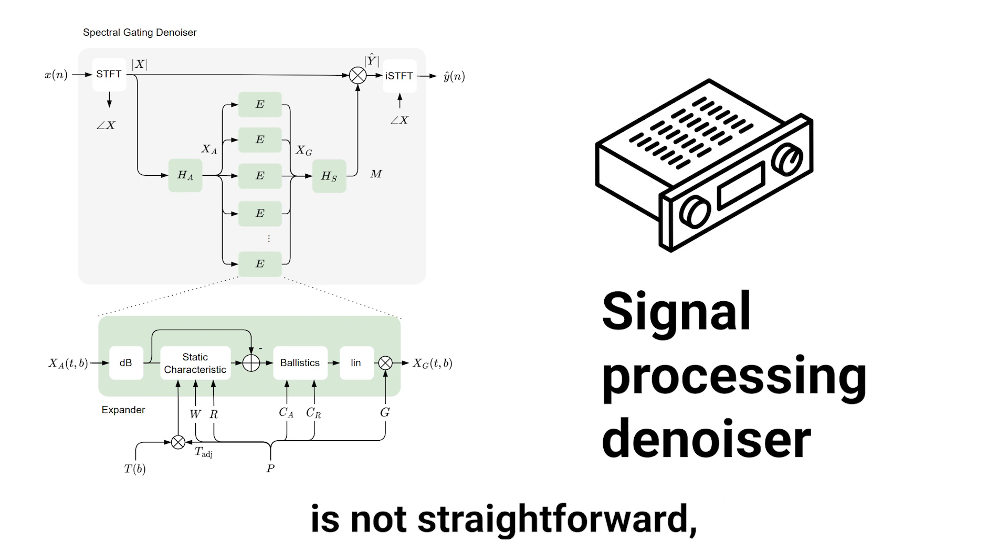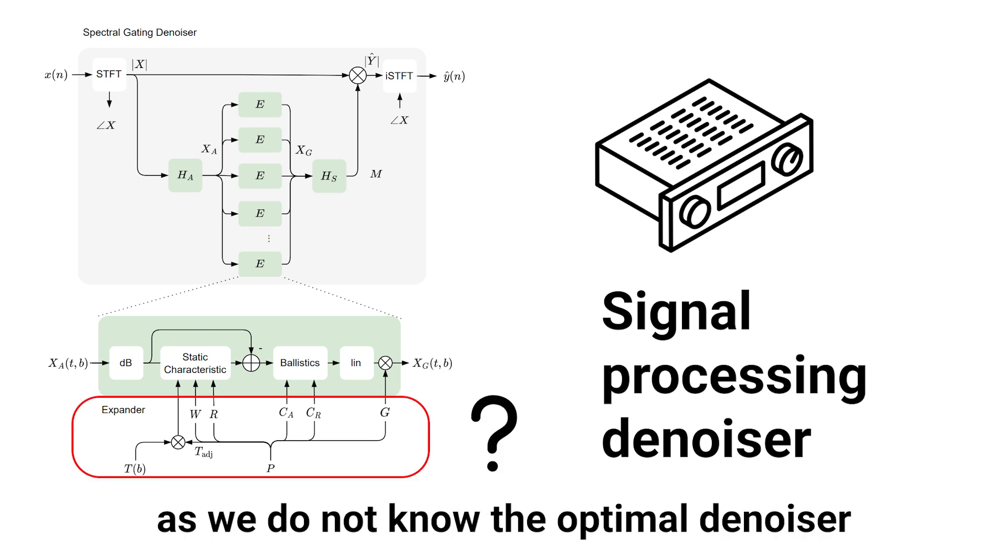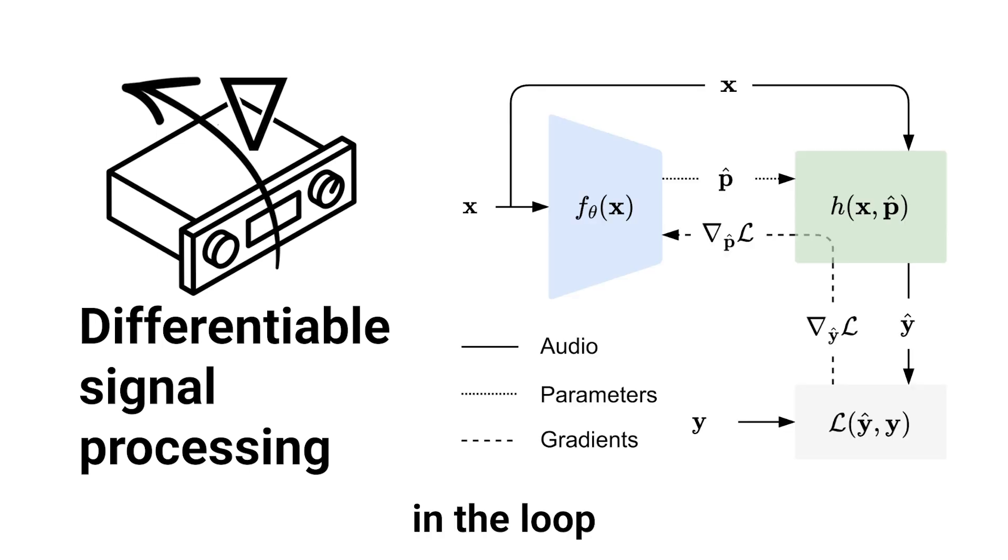However, learning to control our signal processing-based denoiser is not straightforward, as we do not know the optimal denoiser control parameters. This motivates a differentiable signal processing approach where we train end-to-end with the denoiser in the loop, computing a loss on the audio output.